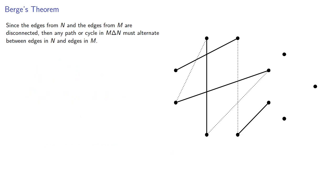Since the edges from N and the edges from M are disconnected—none of the edges of N connect to each other, and none of the edges in M connect to each other—then any path or cycle in the symmetric difference has to alternate between edges in N and edges in M.